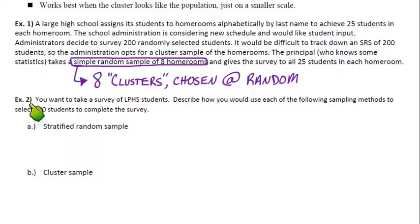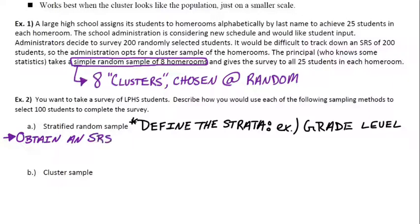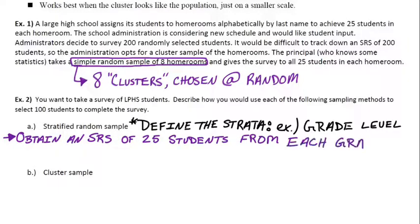Example 2: you want to survey LPHS students. Describe how to use each sampling method to select 100 students. Part A is a stratified random sample. First, define what the groups — the strata — are going to be. A great example would be grade level: freshman, sophomore, junior, senior. After defining the strata, go to each grade level and do an SRS of 25 students from each grade, giving us 100 total students stratified 25 from each grade.